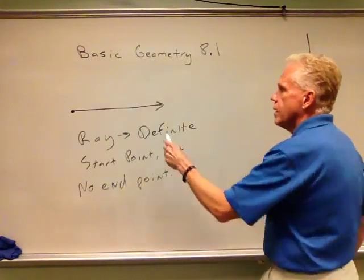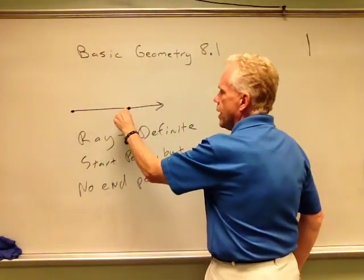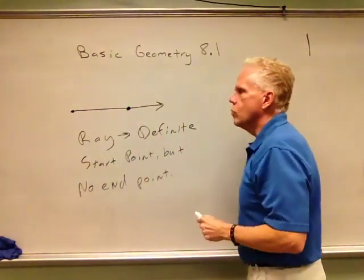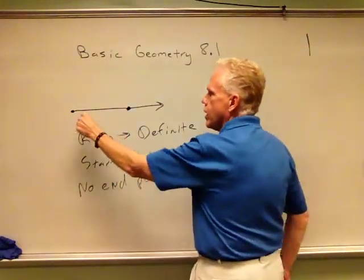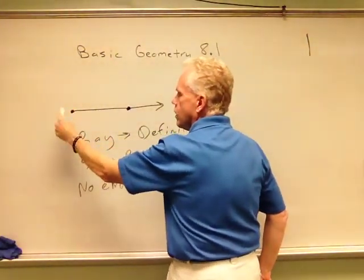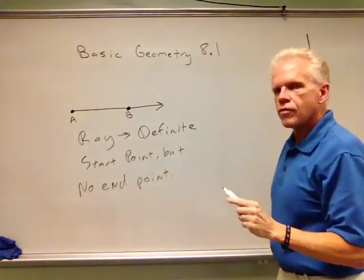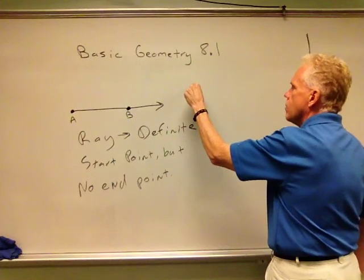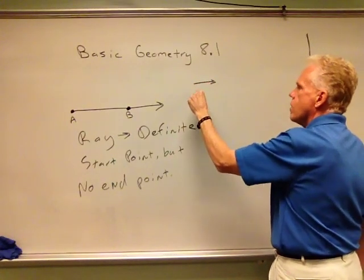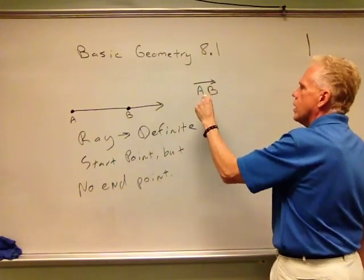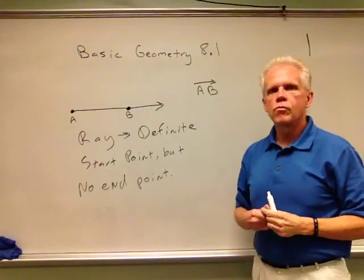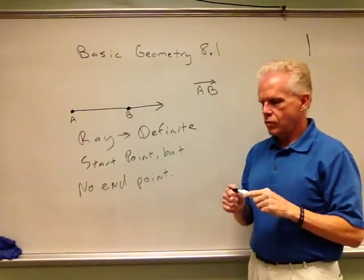We would label a ray very similar to the way we would label a line. We would have points on the ray. We can use AB here also, but the difference is when we label this ray AB, we only have the arrow on one end. So this is labeled ray AB.